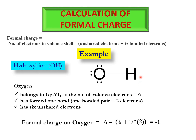Hydrogen does not have any charge on it — its formal charge is zero. Number of valence electrons for hydrogen is one, it has no unshared electrons, and it has formed one bond, so half of the bonded electrons is one. Formal charge = 1 − (0 + 1) = 0. So the overall charge on the OH⁻ ion is −1 + 0 = −1, which confirms the minus one charge of the hydroxyl ion.